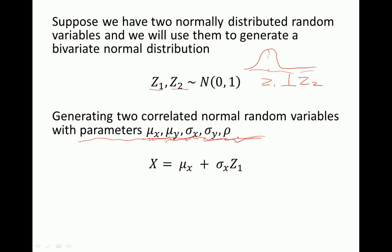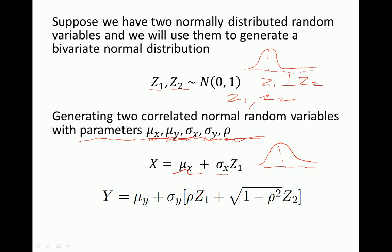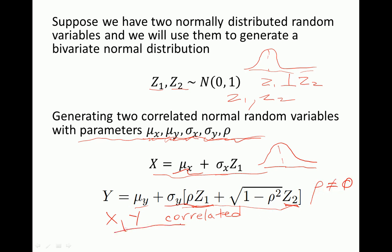We start by generating x using z1: we choose mu x and sigma x to construct a normally distributed variable x from z1. Then we use both z1 and z2 to construct y so that x and y will be correlated. Because x was generated using z1 and y was generated using z1 and z2, if rho is not zero, then x and y will be correlated.